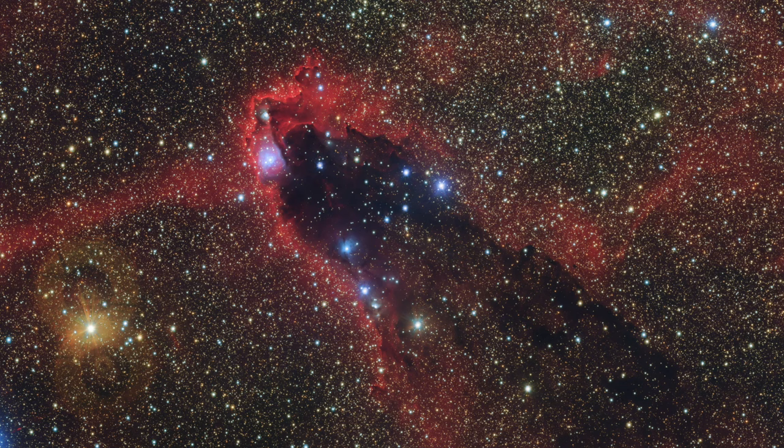A supernova remnant like Vela is classified within our Milky Way galaxy as a nebula, specifically a supernova remnant. This classification tells us that what we're witnessing is the aftermath of a supernova explosion where the outer layers of a star were ejected into space at tremendous speeds. When a massive star exhausts its nuclear fuel, it can no longer support its own gravity. The core collapses and the outer layers are expelled, creating a shockwave that ripples through space. The energy and matter released in this process enrich the surrounding medium, seeding it with heavy elements necessary for the formation of planets and possibly the building blocks of life.